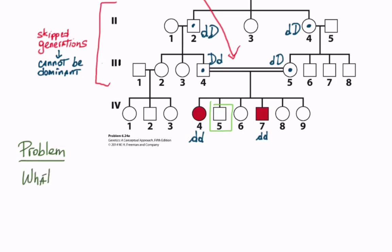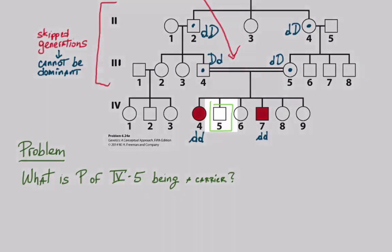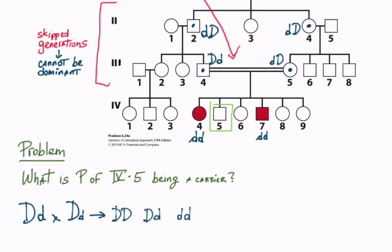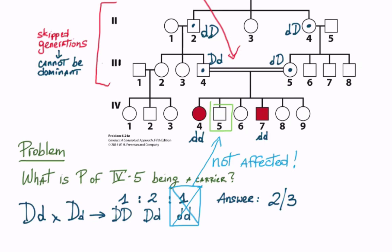Now here's an interesting question: what is the probability that individual four-five is a carrier? We may be tempted to answer one half or two fourths, because heterozygotes are expected in that ratio from the mating of two heterozygotes. We would be wrong. We must factor in our calculation that four-five is not affected. Therefore we can rule out the little d little d genotype, and he must be either big D little d or big D big D. This makes his chance to be a carrier two out of three.